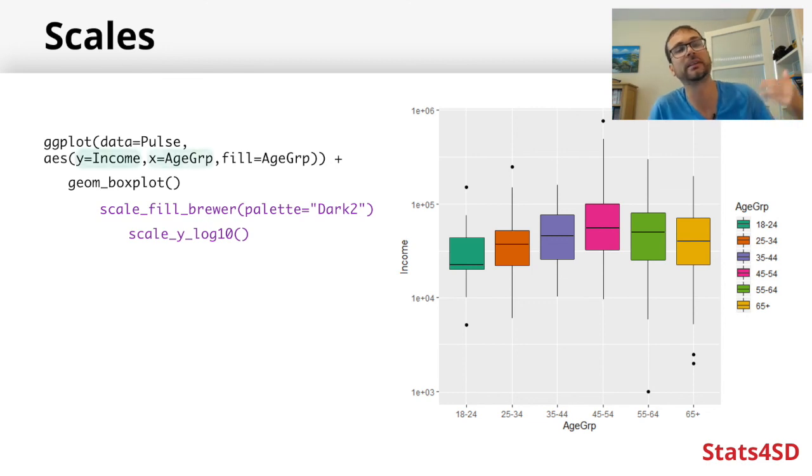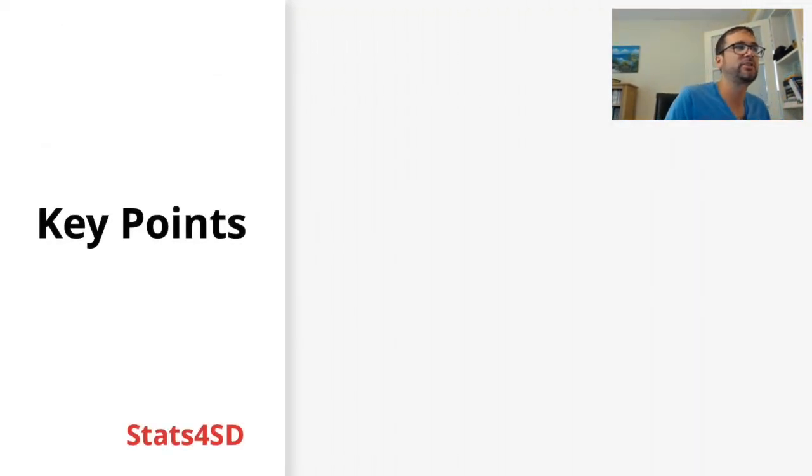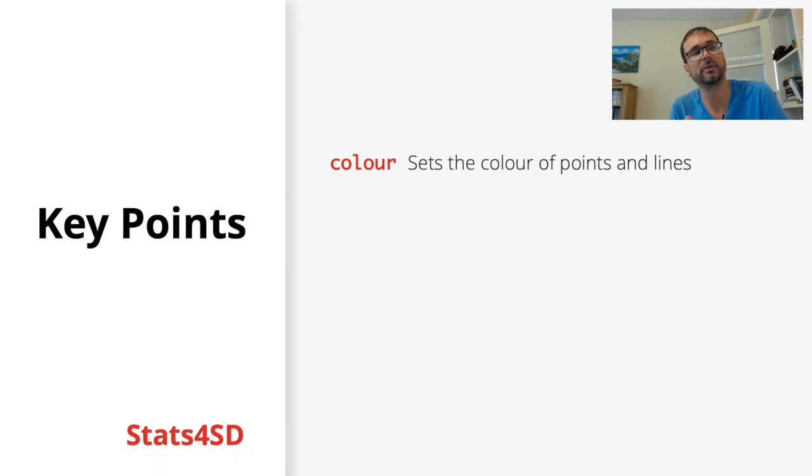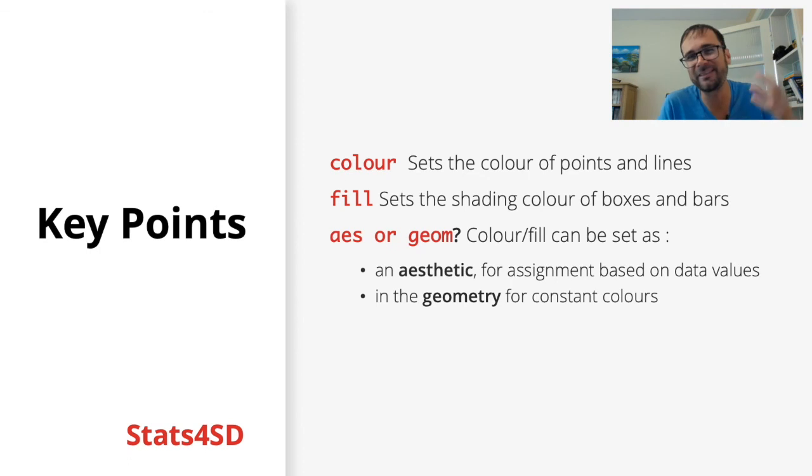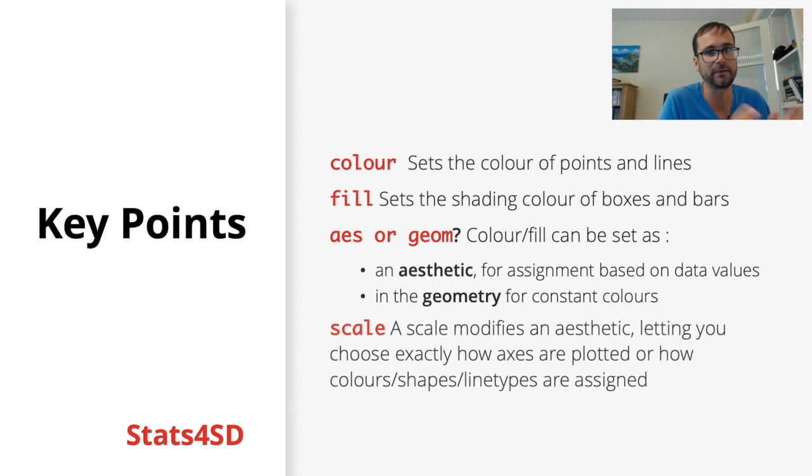Just to recap some key points from this session: when we're talking about color within ggplot2, that's the colors of points and lines, and fill specifies the color when shading boxes or bars. We can set those as either an aesthetic when mapping to a value from our data, or set it within the geometry if we're just setting it to be constant for all plot points, bars, or lines. The scale modifies the aesthetic, and those functions all work in that scale_aesthetic_modifier format. This lets you modify exactly how your axes are being plotted or what colors, shapes, and lines might be assigned.